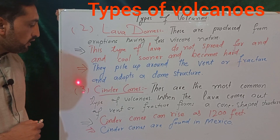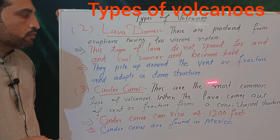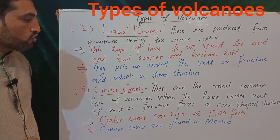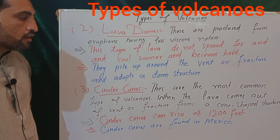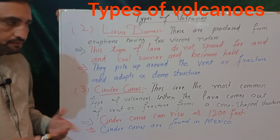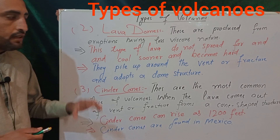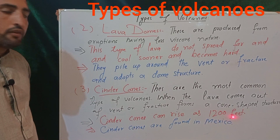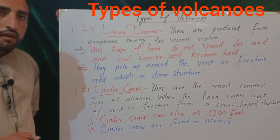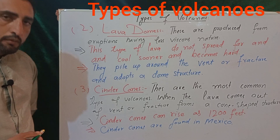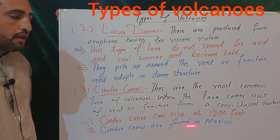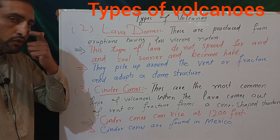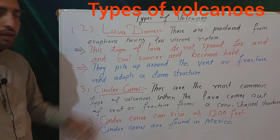The third type of volcanoes are called cinder cones. These are the most common type of volcanoes. When the lava comes out of the central fracture it forms a cone-shaped structure. Cinder cones can rise as high as 1200 feet above the surface of the earth. Cinder cones are most commonly found in Mexico.